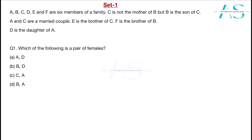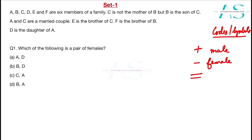To determine the different relations between certain people we use certain codes or symbols. A plus sign is used to denote male gender, minus to denote female gender, and an equal-to sign between two persons (A = B) means they are a married couple. Marriage here is always between two people of different genders — one male and one female.